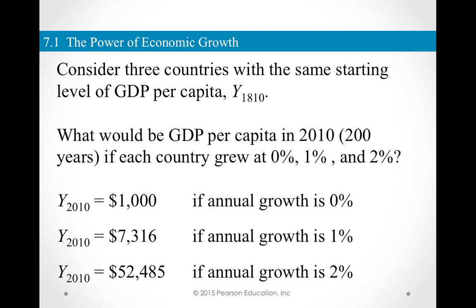However, look at the numbers for a 2% growth rate, and you can see the remarkable difference between the country that grew at 1% and the country that grew at 2%. So even though marginal differences might make growth rates seem small, they can imply much greater differences in standard of living over a period of time. If a country grew at 2% for 200 years, then the $1,000 per capita GDP in 1810 would become $52,485 in 2010.